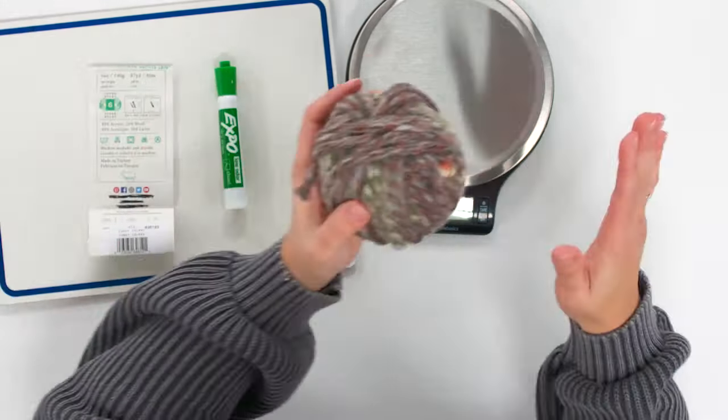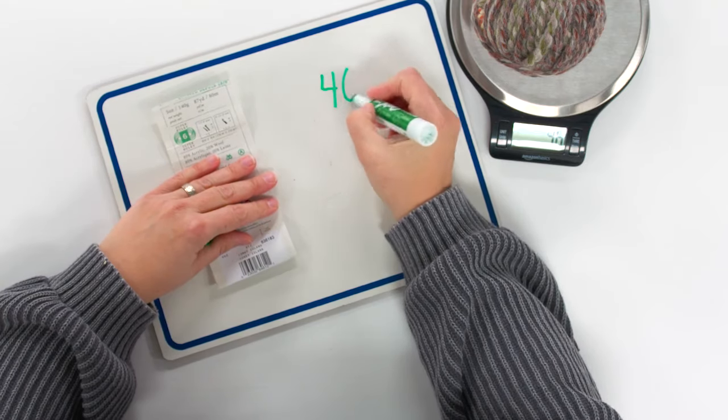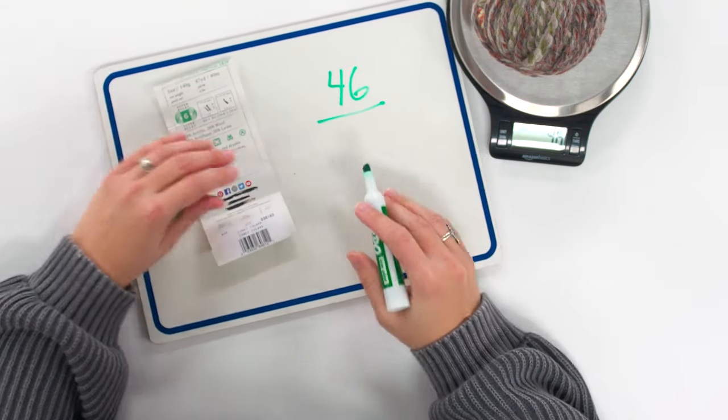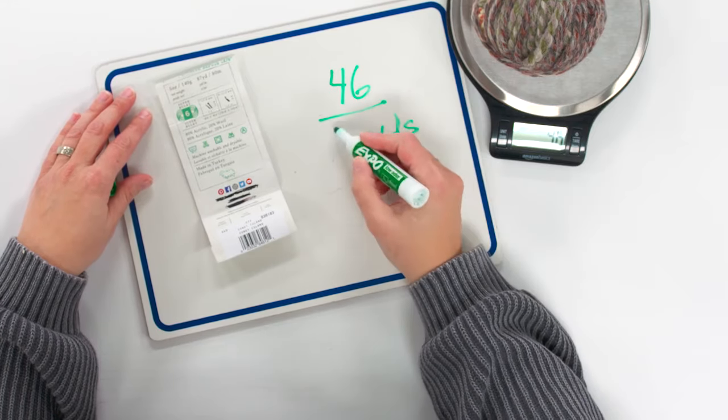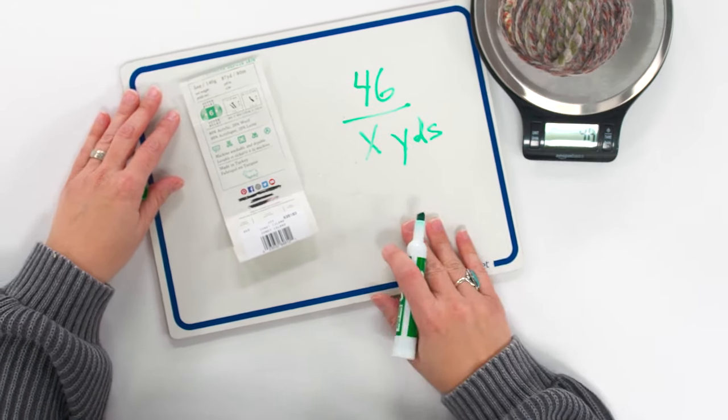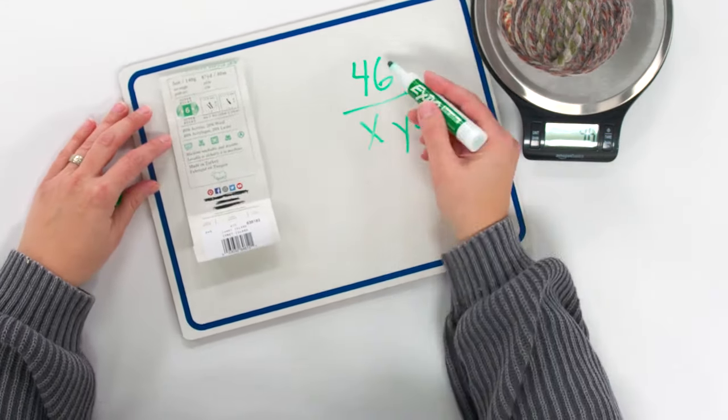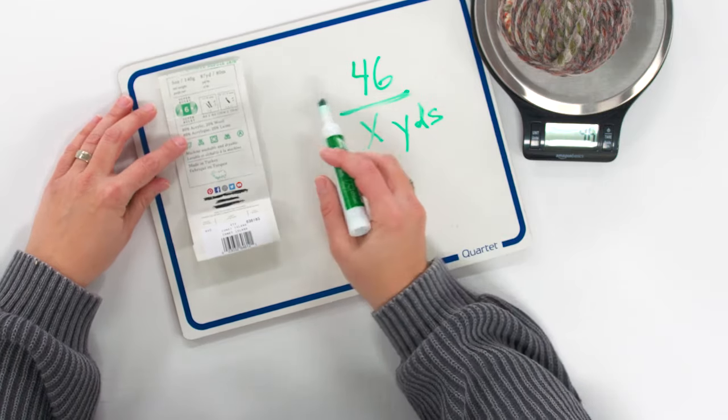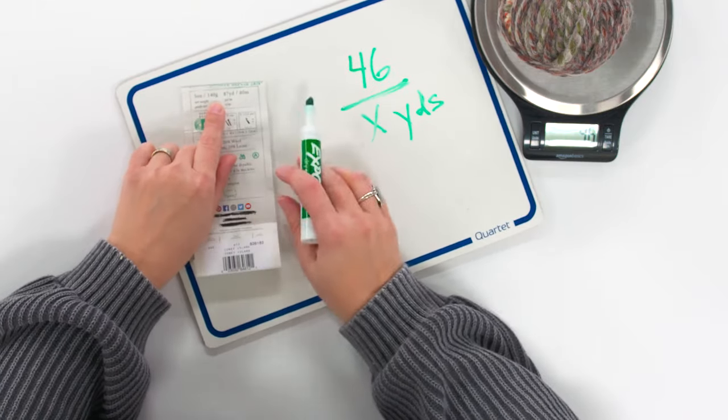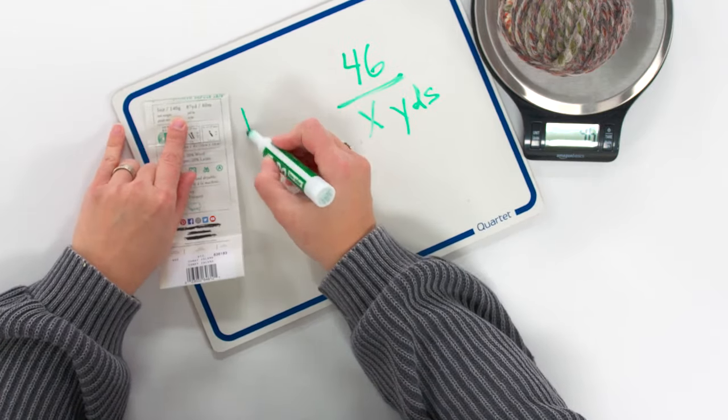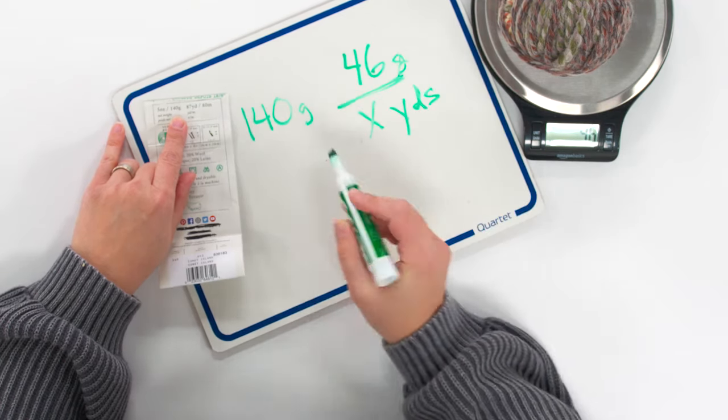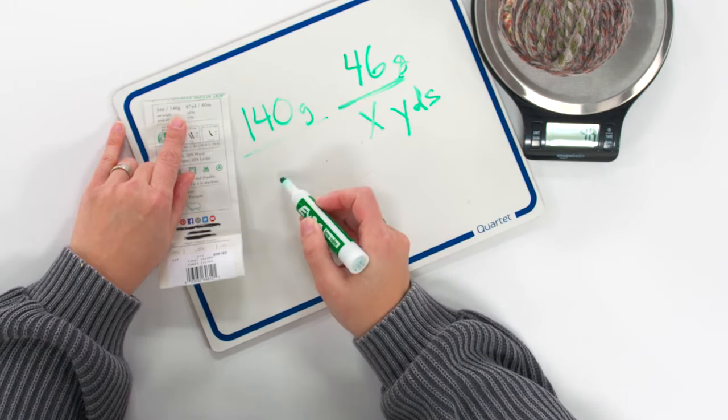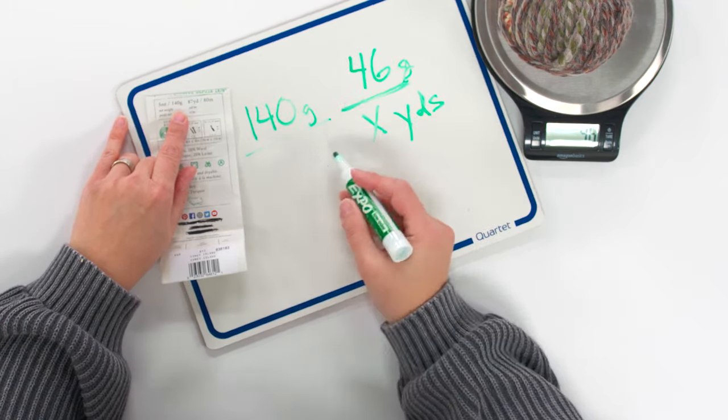Let's say that this is our ball of yarn and we want to know how many yards we have left. If you still have the ball band, you can take a look at it. The ball band will tell you things like how much the total skein weighed when you first bought it and how many yards or meters you had to work with. So you know your beginning numbers there.